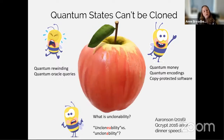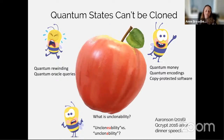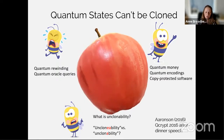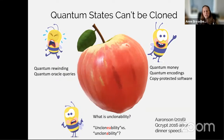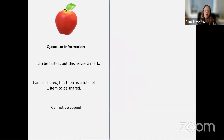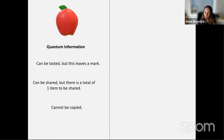I want to tell you about the physical analogy for quantum information, which is really useful when talking about unclonability. To me, quantum information is much more like a physical object. If you're trying to think about crypto applications, it's useful to think that quantum information is an apple. An apple has physical properties that we can emulate using cryptographic protocols that we cannot emulate using conventional information.